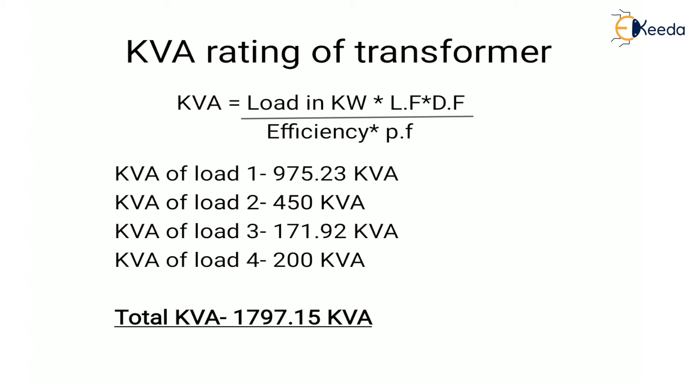Similarly, we calculate the KVA value for the other loads. The KVA value for load 2 is 450 KVA, for load 3 it is 171.92 KVA, and for load 4 it is 200 KVA. Summing all these KVA values, we get a total KVA of 1797.15 KVA.